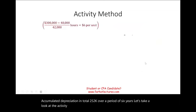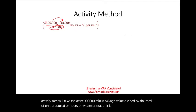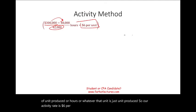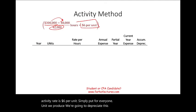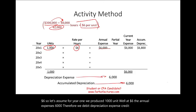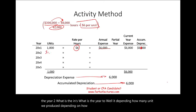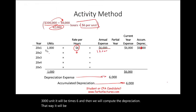Under the activity method, first we find the activity rate: $300,000 minus salvage value, divided by total units produced, which is 42,000 units. Our activity rate is $6 per unit — for every one unit we produce, we depreciate this asset $6. For year one, if we produced 1,000 units, the annual expense is $6,000. Debit depreciation expense, credit accumulated depreciation $6,000. For year two, if we produce 3,000 units it would be $18,000; if we produce 30,000 units it would be $180,000 — depending on the activity level.